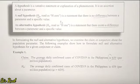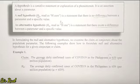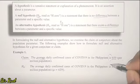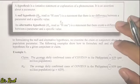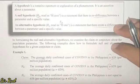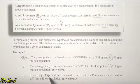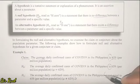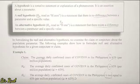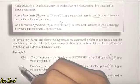Next, in constructing the alternative hypothesis, all we need to do is contradict the null hypothesis. The word used in the null was 'is,' so we keep everything the same except we change that word. The alternative hypothesis states: the average daily confirmed cases of COVID-19 in the Philippines is not 659 per million — meaning it is not equal to 659 million. We used the word 'not' to express there is a difference.